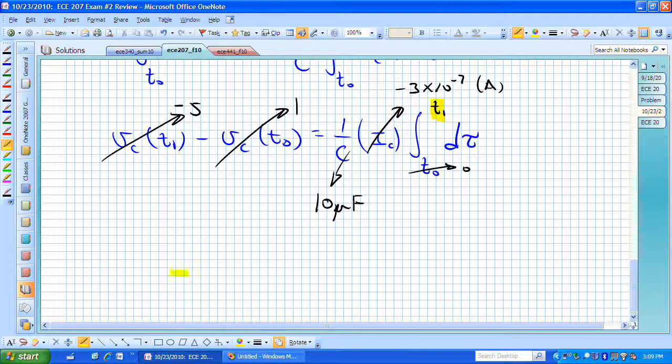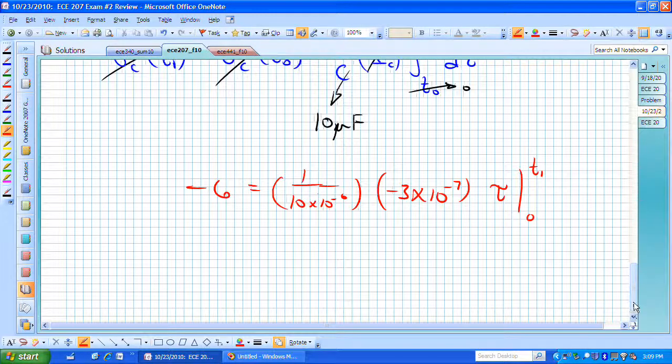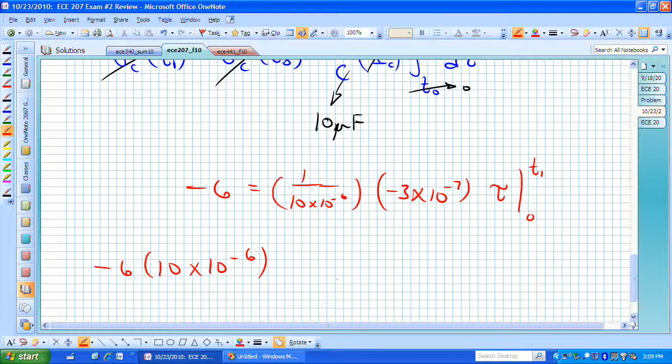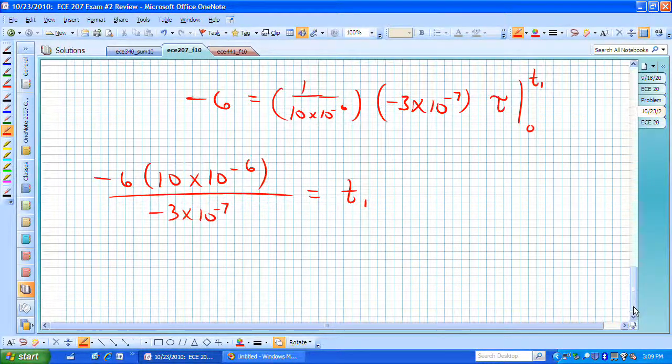So it's now going to be minus 6 volts is equal to this 1 over 10 times 10 to the minus 6 times minus 3 times 10 to the minus 7. The lower limit goes away and we now have minus 6 times 10 times 10 to the minus 6 divided by minus 3 times 10 to the minus 7 is actually equal to t sub 1. These minus signs cancel. The 3 and the 6 clean up a little bit.